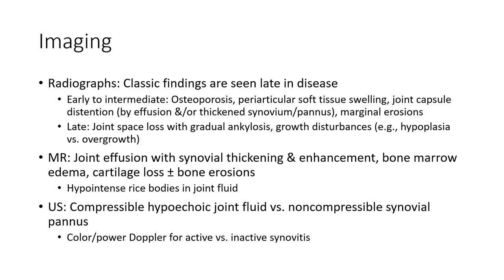Imaging: radiograph classic findings — simulate disease early to intermediate. Periarticular soft tissue swelling, joint capsule distension by effusion, and/or synovial thickening. Marginal erosion, joint space loss with eventual ankylosis, bone disturbance, hypoplasia or overgrowth of joints. MRI: synovial enhancement, bone marrow edema, cartilage loss plus or minus bone erosion, hypointense rice bodies in joint. Ultrasound: compressible hypoechoic joint fluid, non-compressible synovium, color flow indicating active synovitis.